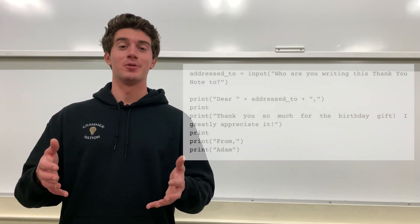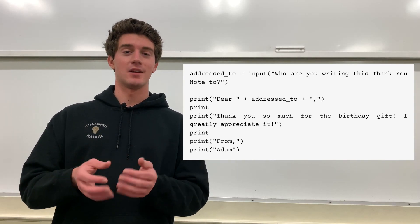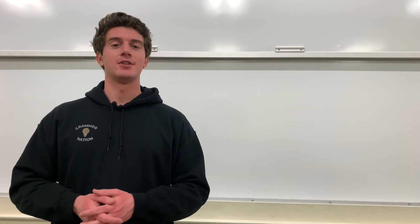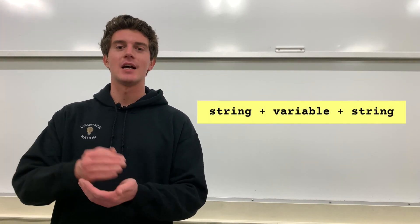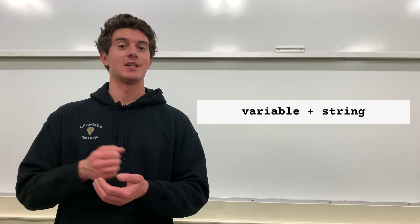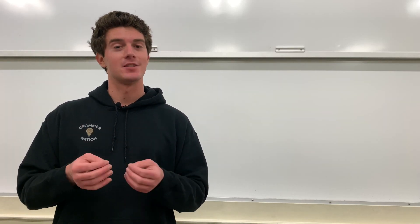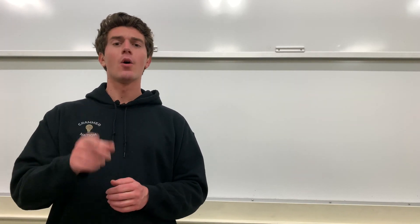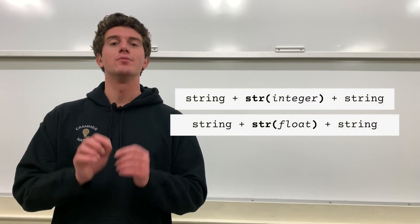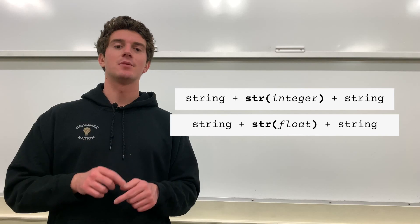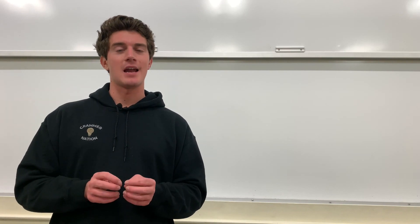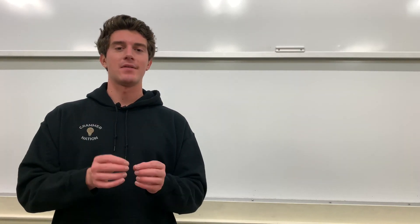Here's the rest of the print statements to complete this letter so it matches that image. Now that we've got an example of actually coding with concatenation, let's revisit the template: string + variable + string. Note though that it could be just string + variable, or variable + string — it really just depends on the dynamic message you're trying to send to the user. Also, if you're concatenating a variable that is an integer or a float, you need to surround your variable with the string function, because you can't concatenate strings with integers or floats — you have to concatenate strings with strings.